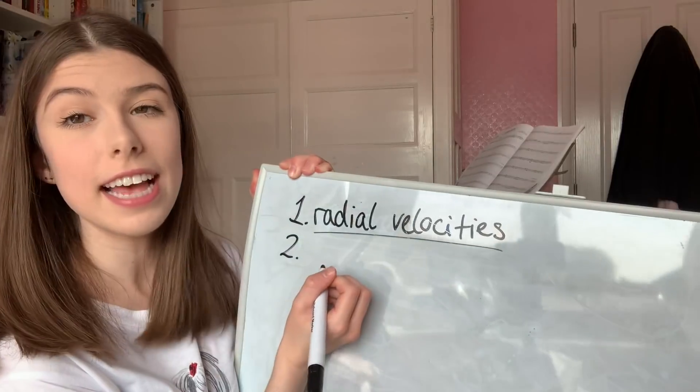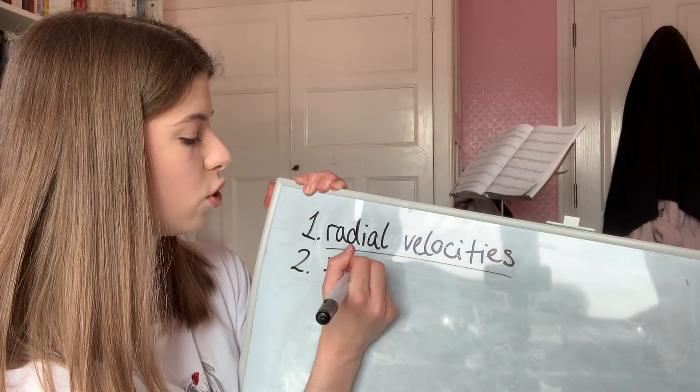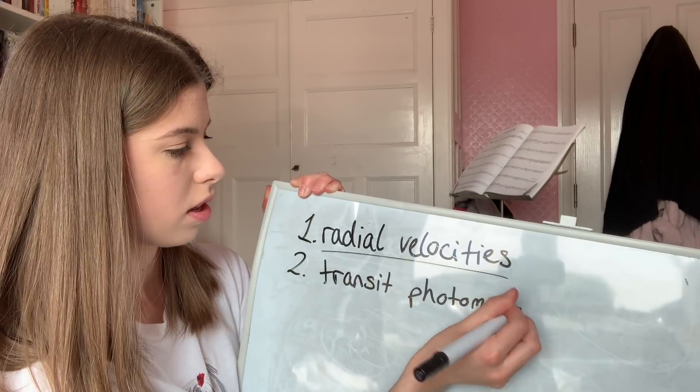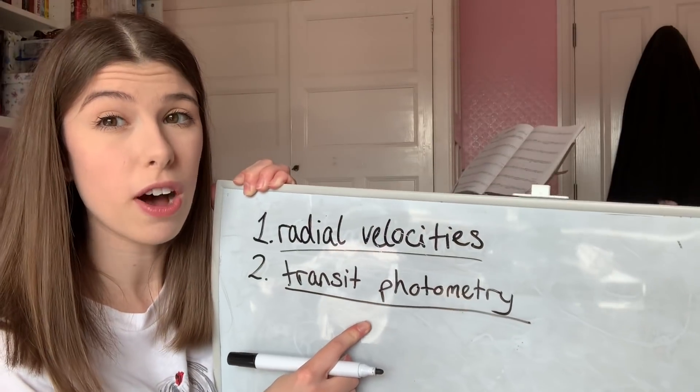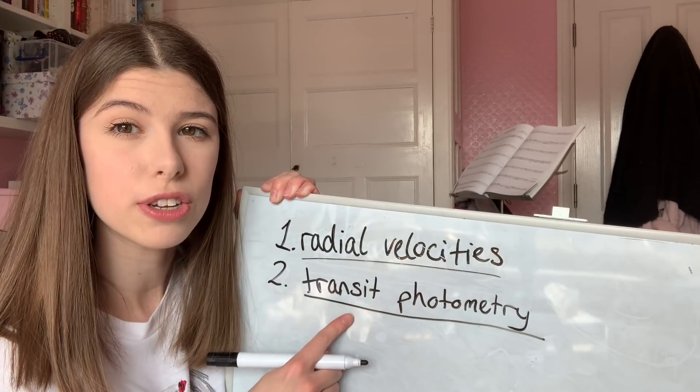The second method we can use to detect exoplanets is transit photometry. This method has been by far the most successful so far, and we've detected the most exoplanets so far using this method.